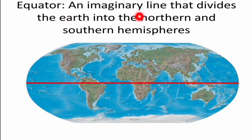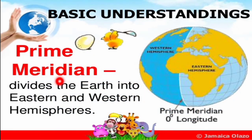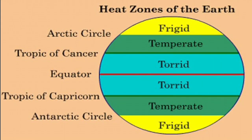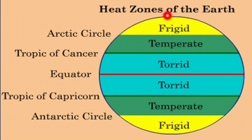The equator is an imaginary line that divides the Earth into the Northern and Southern hemispheres. The Prime Meridian divides the Earth into the Eastern and Western hemispheres. The heat zones of the earth are: the torrid zone from the equator to the Tropics of Cancer and Capricorn; the temperate zone from the Tropics to the Arctic and Antarctic Circles; and the frigid zone from those circles to the poles, mostly covered with ice.